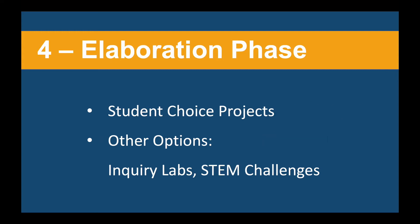Materials that start with a number four are for the elaboration phase. These include the student choice project within the 5E lesson. However, there are additional options you can use as well. During this phase, students who are showing mastery of a topic can move into projects and experiences that build on their knowledge, while students that need more help can work in small groups to improve their understanding.